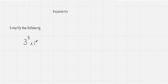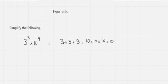Now we have the question: simplify the following. I am taking 3 power 3 multiplied with 10 power 4. So 3 power 3 means I need to multiply 3 three times: 3 times 3 times 3. And 10 is multiplied 4 times because it has power 4. Now 3 times 3 is 9, and 9 times 3 is 27. So 27 multiplied with 10 power 4, which is 10,000. So the answer is 270,000.